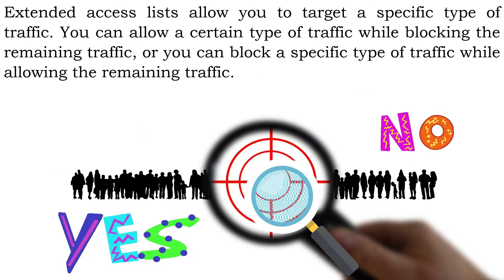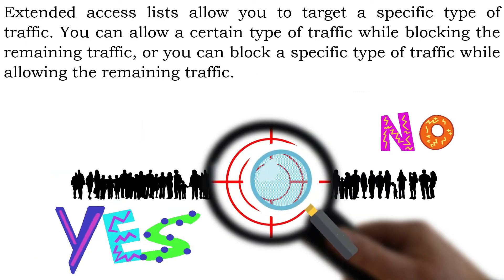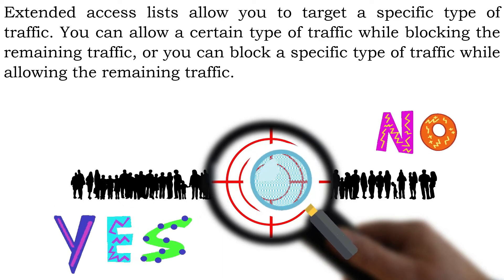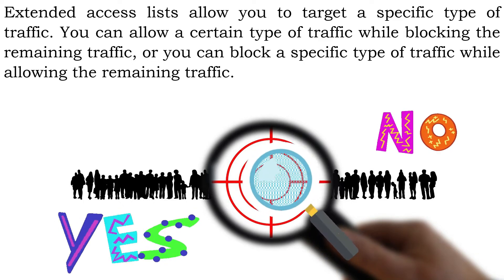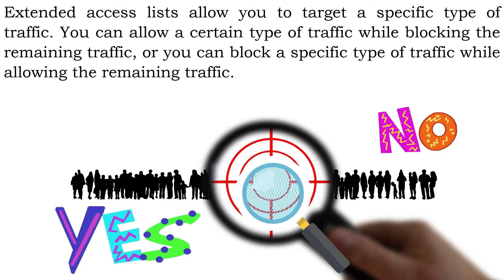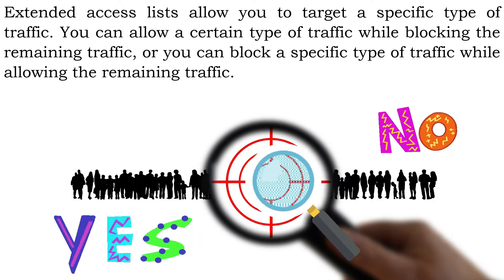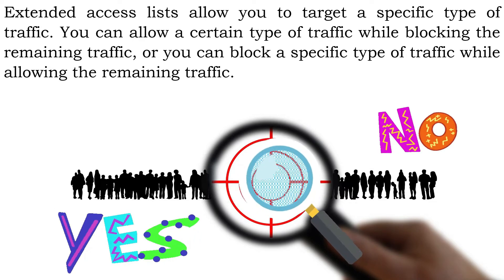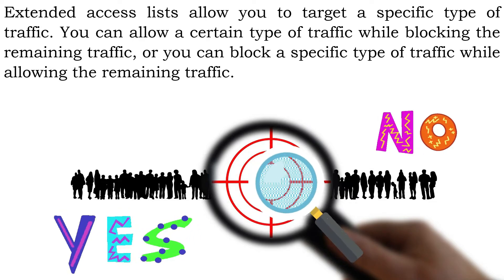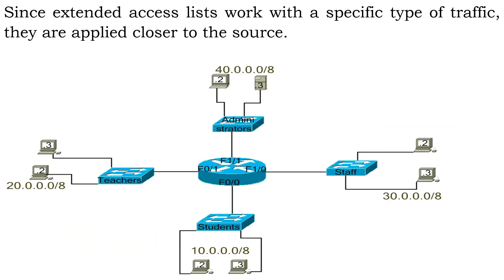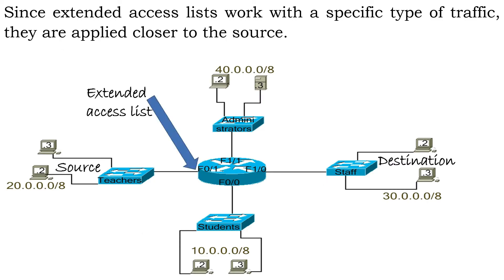Extended access lists allow you to target a specific type of traffic. You can allow a certain type of traffic while blocking the remaining traffic, or you can block a specific type of traffic while allowing the remaining traffic. Since extended access lists work with a specific type of traffic, they are applied closer to the source.